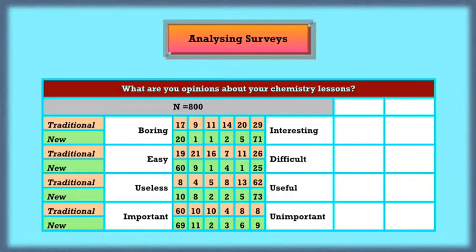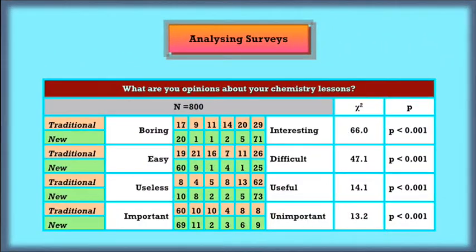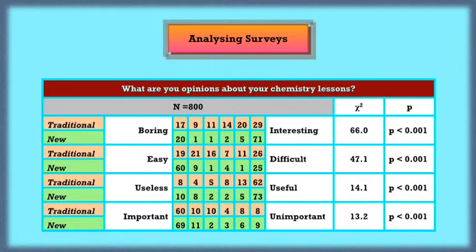That's where the chi-square statistic really comes into its own. When the calculations are done, that is the results. For boring, interesting, the chi-square value is 66.0. The chance of that happening by chance is less than one in a thousand. We can be confident that the new approach, the new materials, were increasing the interest enormously. Similarly, with the other questions.